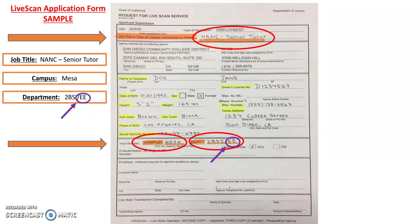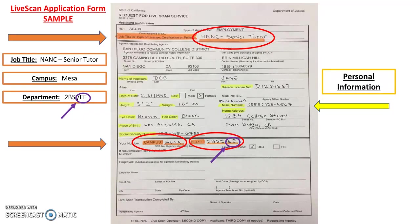The portion of the form that is highlighted in yellow is where you will put your personal information such as name, date of birth, driver's license number, etc.